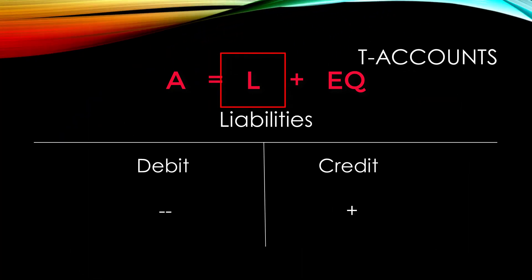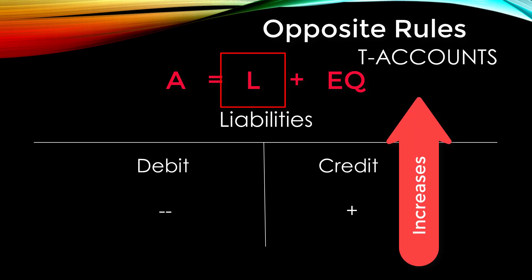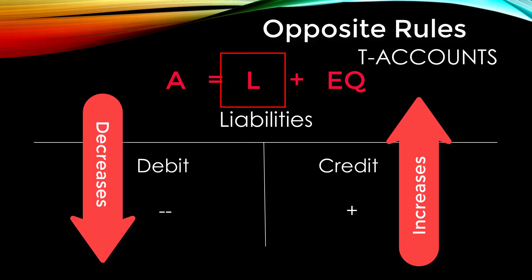Since liabilities fall on the other side of the equation, their rule is the opposite of assets. All liability accounts are increased with credits and decreased by debits. Because liabilities fall on the other side of the equation, this rule is the opposite of the rule for assets.